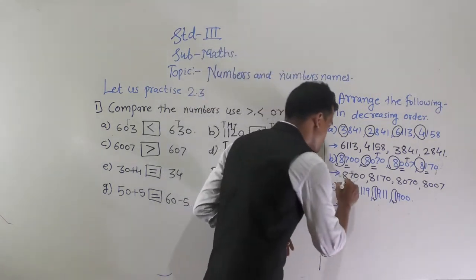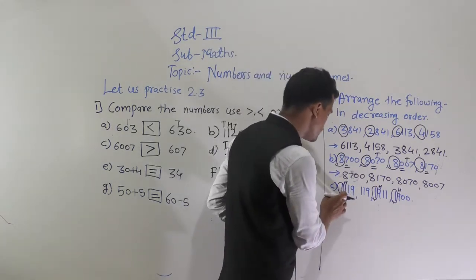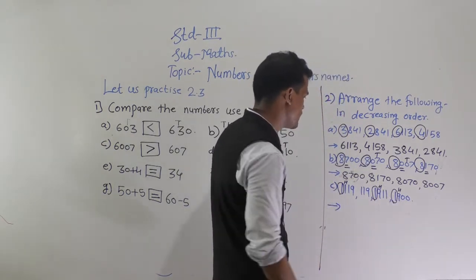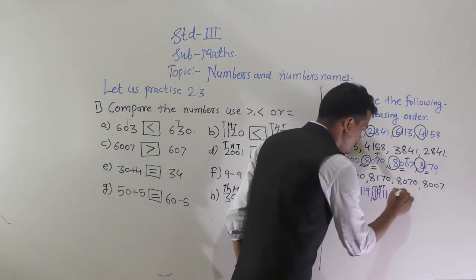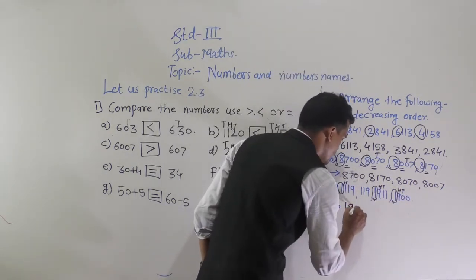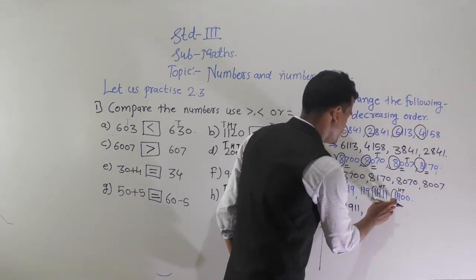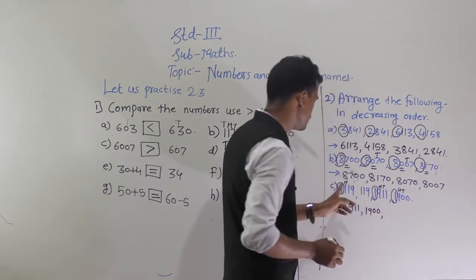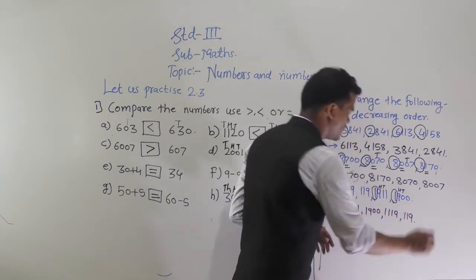Compare the hundreds place digit: here 1 is at the hundreds place, here 9 and here also 9. So compare the tens place between 1911 and 1900: here 1 and here 0 — 1 is greater than 0. So 1911 is the greatest, then 1900, then 1119, and at last 119.